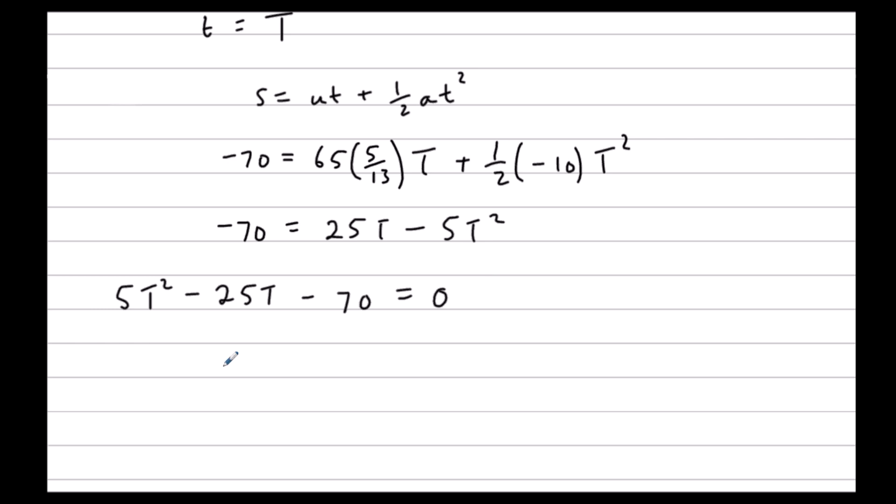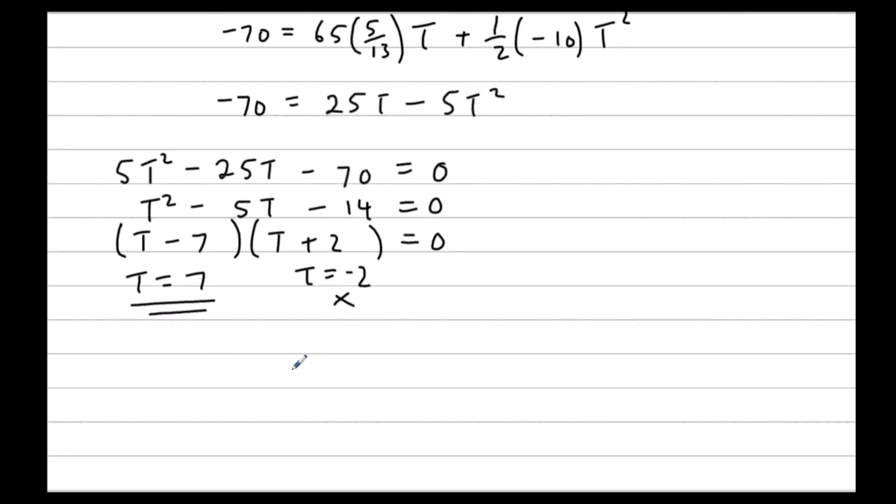We could just type this in the calculator, but if we divide by 5, we can make it simpler and it will factorize. It's minus 7 and plus 2. So T equals 7 or T equals negative 2. It can't equal negative 2, so T must be 7. 7 seconds.